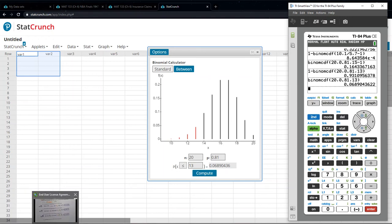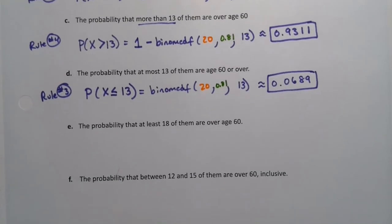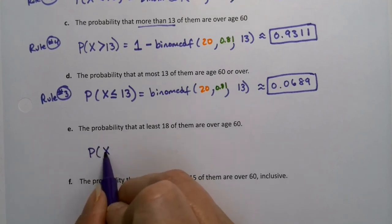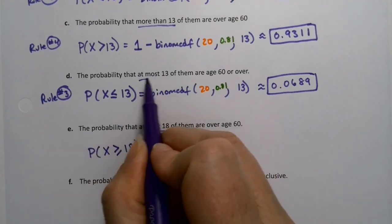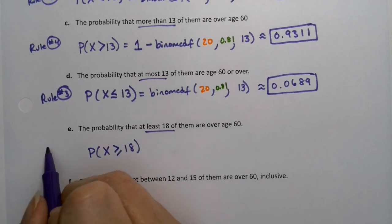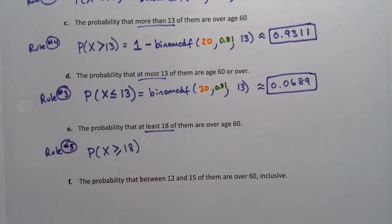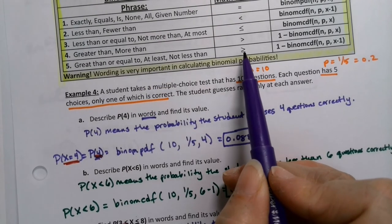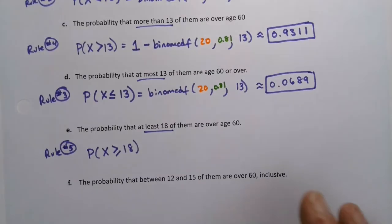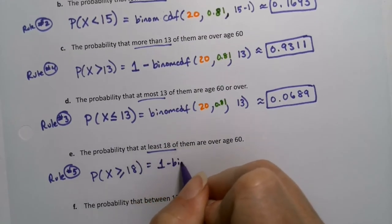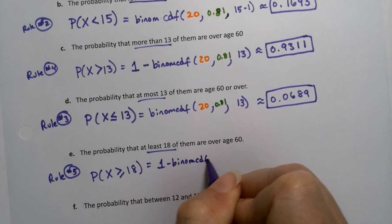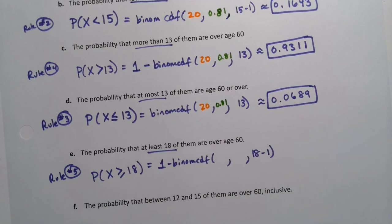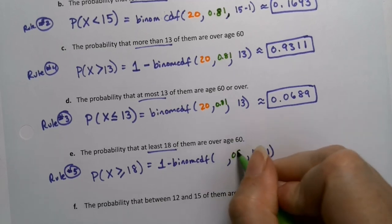Now: P(at least 18) — at least 18 means X ≥ 18, which is Rule 5, the trickiest rule. It's right there in the table under 'at least,' using greater than or equal to. The formula is one minus binom CDF. The first two inputs don't change, but the last one will be 18 minus one (which is 17). Follow the list exactly and you won't go wrong.